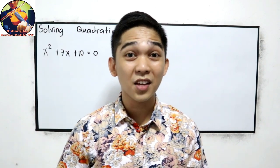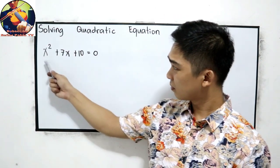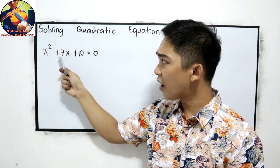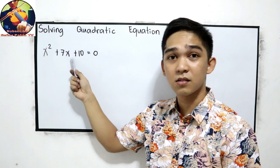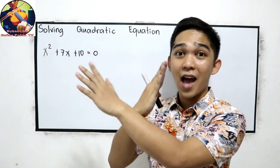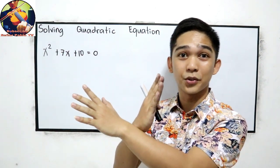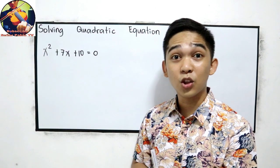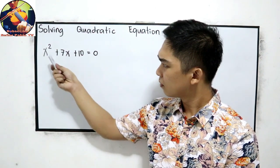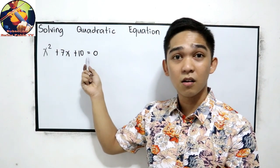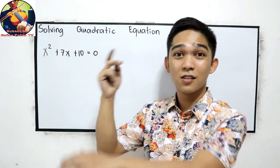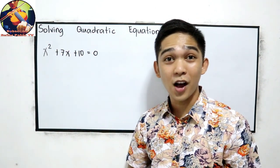Can we use extracting the square root? If we extract the square root, we will have the square root of 7x, which becomes more complicated. So, no for extracting the square root. How about factoring by GCF, greatest common factor? In this case, we don't have a common factor. So, no for the greatest common factor.